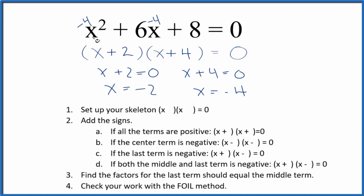So that's it. We factored the equation x squared plus 6x plus 8 equals 0. This is Dr. B, and thanks for watching.